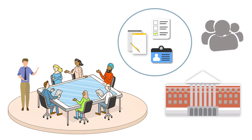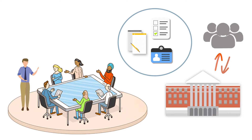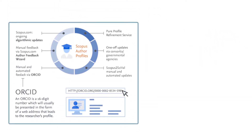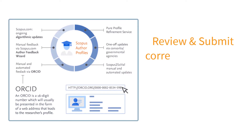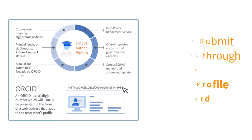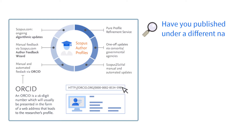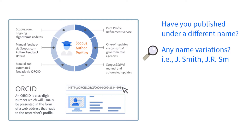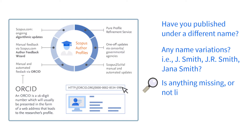This includes working with researchers to make sure profiles are accurately and correctly affiliated with the university — for example, having researchers regularly review their author profiles in Scopus and use the profile wizard to submit corrections as needed. This includes instances where they may have published under a former last name or used a different name variation, ensuring no research is missed or incorrectly affiliated with a different institution.